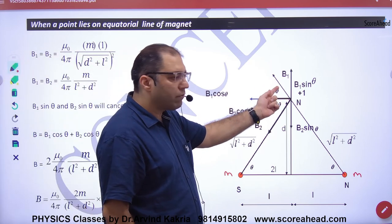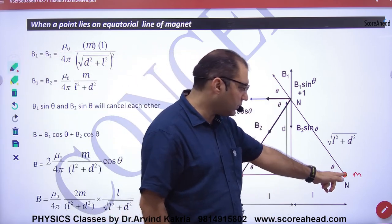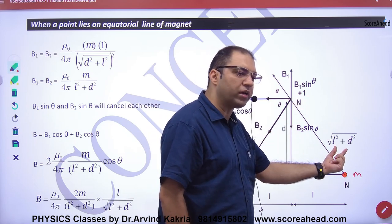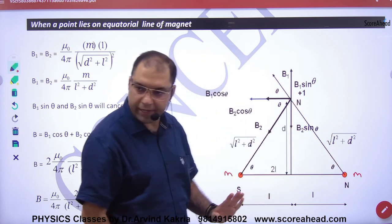What will be the value of B1? Mu naught by 4 pi, M into 1 upon under root of L square plus d square whole square.